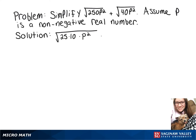And then our square root of 40p squared, we're going to turn into the square root of 4 times 10 times p squared.